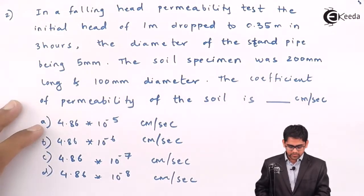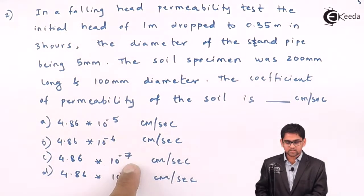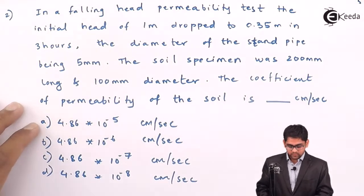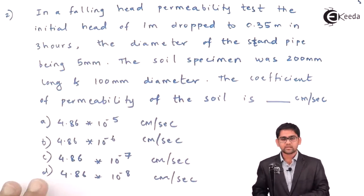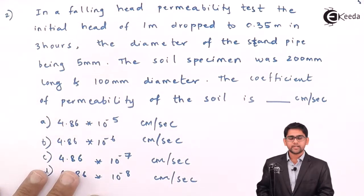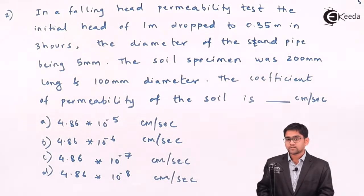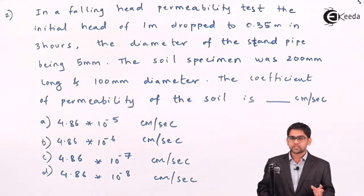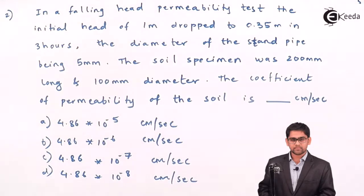Looking at the options, they are essentially the same — just differing by powers: 10 raised to minus 5, minus 6, minus 7, minus 6. So the answers are in the range of 10 times of each other. We must have clarity about the falling head permeability test. We have discussed this concept in the measurement of permeability by lab test, where we have seen two different methods.